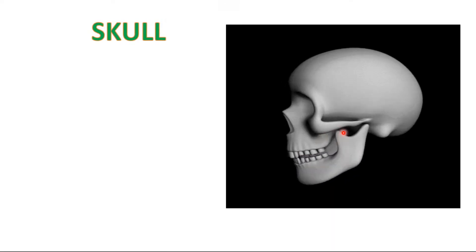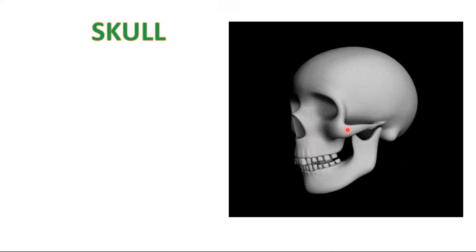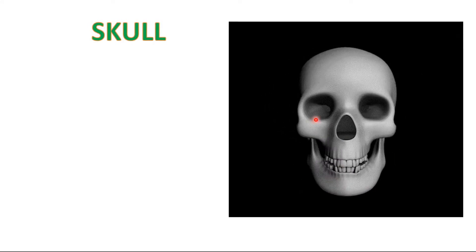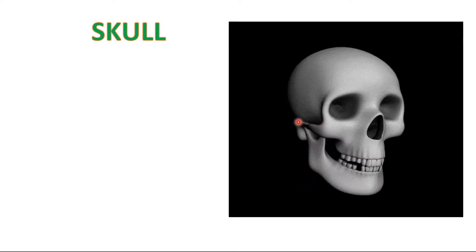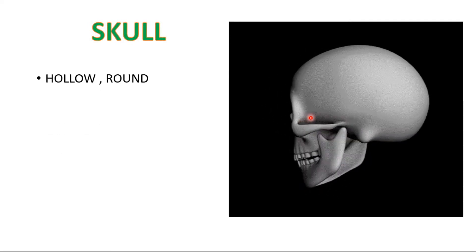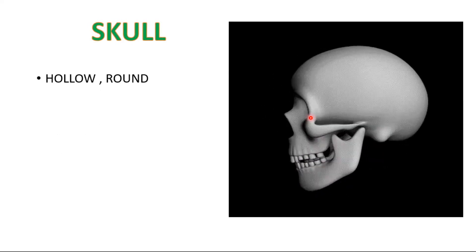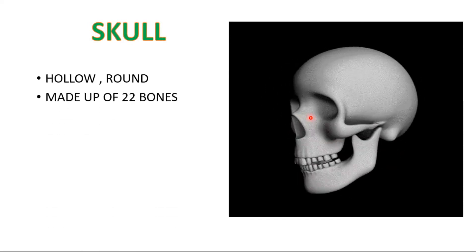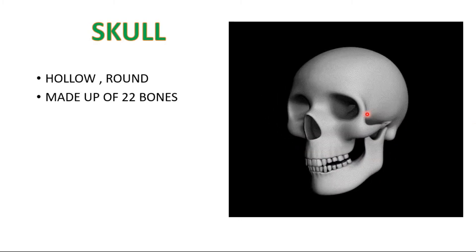Let us study them one by one. First, we will study the skull. The picture you are seeing here is a skull. Skull is a hollow structure. It's round in shape. It protects our brain and is made up of 22 bones.